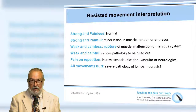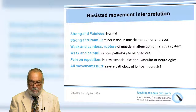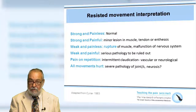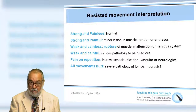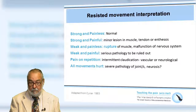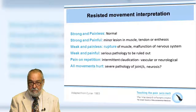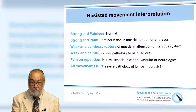Resisted movement interpretation, as explained by Cyriax, is as follows. If the movement is strong and painless, we're probably talking about something completely normal. If it's strong and painful, we're probably talking about a minor lesion in the muscle, tendon, or attachment of the tendon to the bone — the enthesis. Weak and painless suggests rupture of the muscle or complete neurological dysfunction. If it's weak and painful, then possibly we're talking about serious pathology that should be ruled out. Pain on repetition reminds us of intermittent claudication, and pain on all movements suggests either serious pathology or that the problem is probably not physical at all.